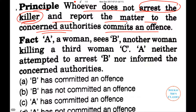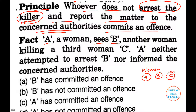This is not correct, so you have committed an offense in the eyes of law. Now let us look at the fact. There are three women: the first is referred to as A, the second as B, and the third as C. A sees B killing C.